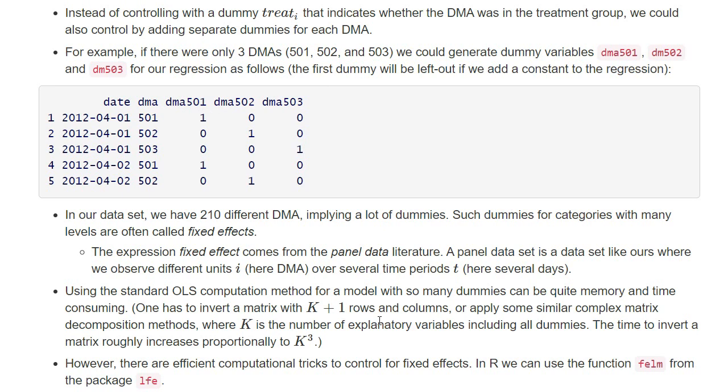The time to invert a matrix increases roughly to the power of k to the three. So if k increases, then sometimes this matrix inversion can take a very long time and then lm may be very slow if you have a lot of dummy variables for those fixed effects.